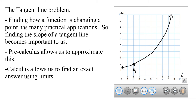The tangent line problem — one of the main questions you're going to be asked in calculus is to find either the equation or the slope of a tangent line. That's very difficult because the slope equation requires a difference of x values and y values as a quotient. Since we only have one point, we only have one x value and one y value, which becomes a challenge. In calculus we can find a process that allows us to do that.